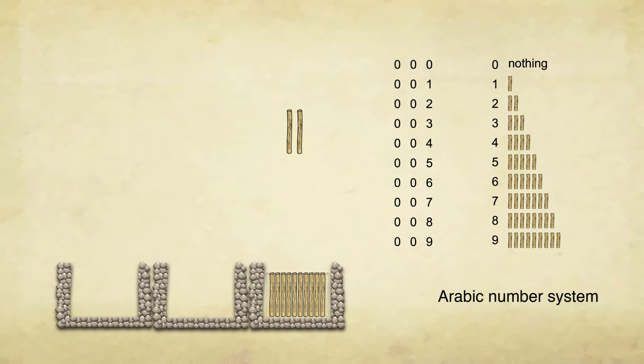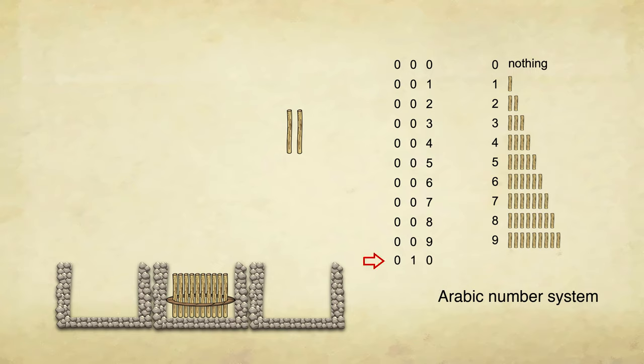Since we bundle up every 10 objects into the next bin and clear the current bin, in the symbol world, we will be taking the next position and reset previous positions.